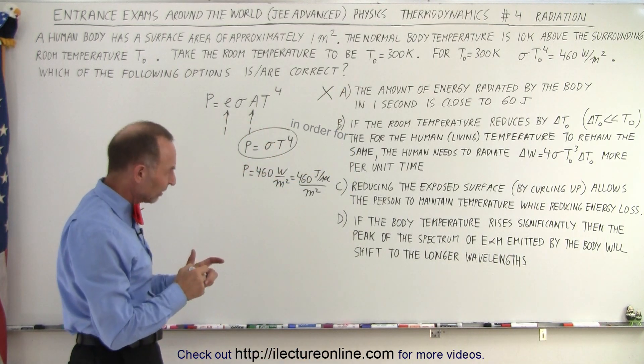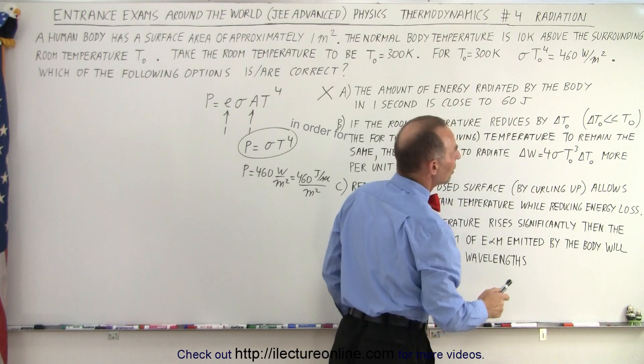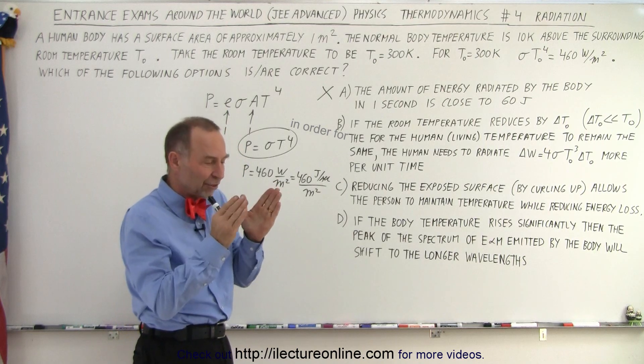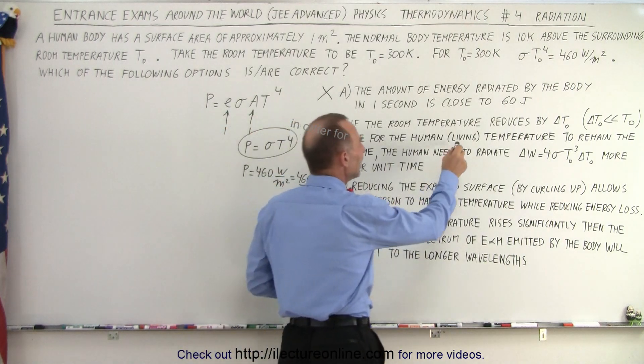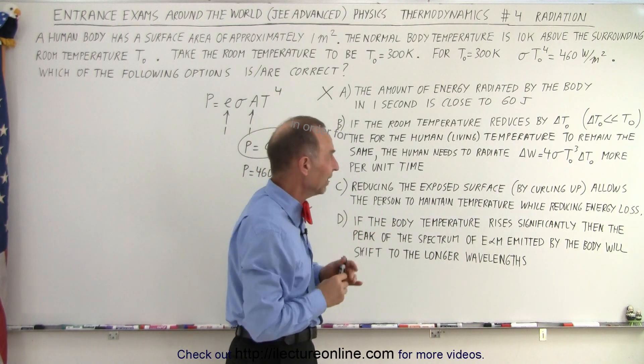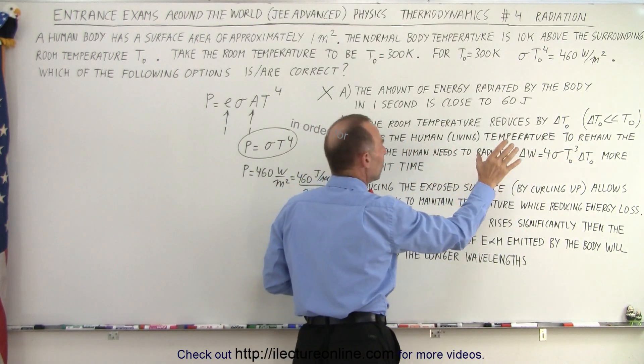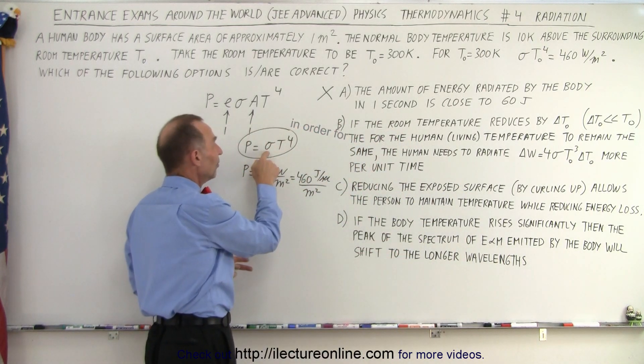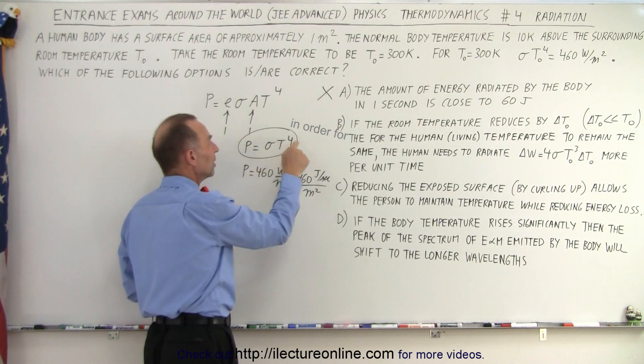Now for part B, it's kind of a long sentence. If the room temperature reduces by a small amount, delta T, where delta T is much less than T sub-naught, so the room temperature drops by a little bit, so that the difference in temperature between the body and the room has grown a little. Then for the human living being, as they stipulate that the human is living, that it's not a dead corpse, that it's actually living, for the temperature of the body to remain the same, the human needs to radiate more energy per unit time. Now, it turns out, if you take the derivative of this, you do indeed get 4 sigma T to the third power, and you get dP dT, if you put a dT over here, you indeed get the derivative, that would be the change of the radiation with a small change in the temperature.